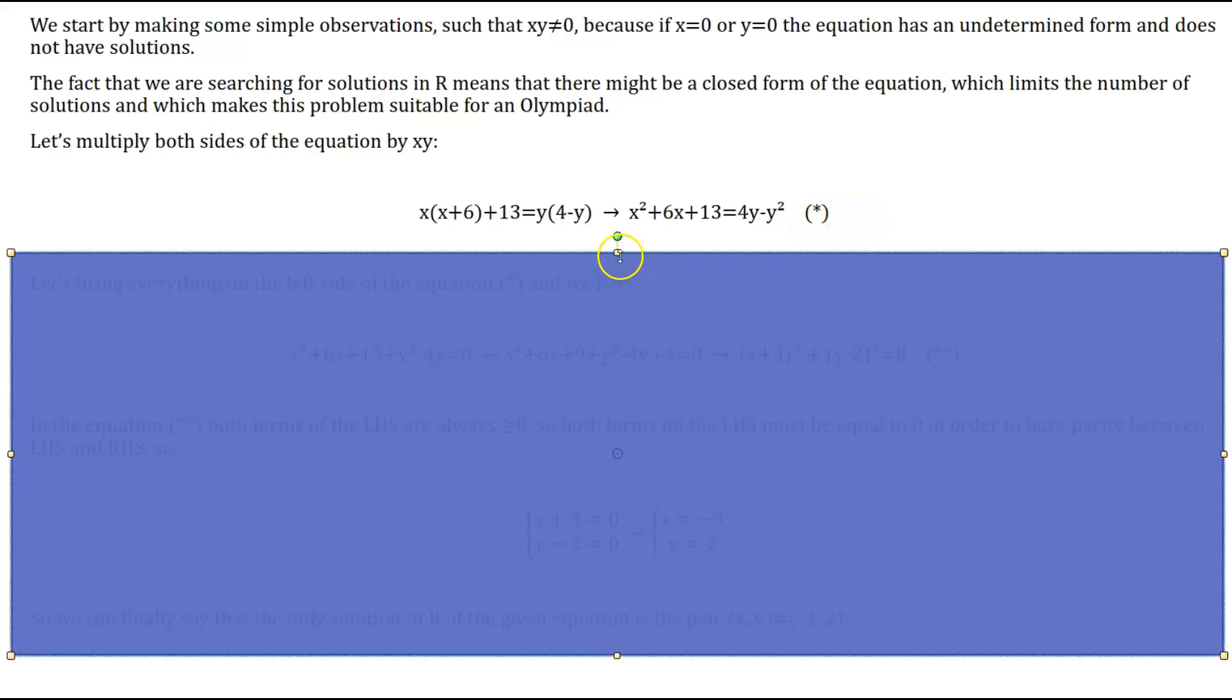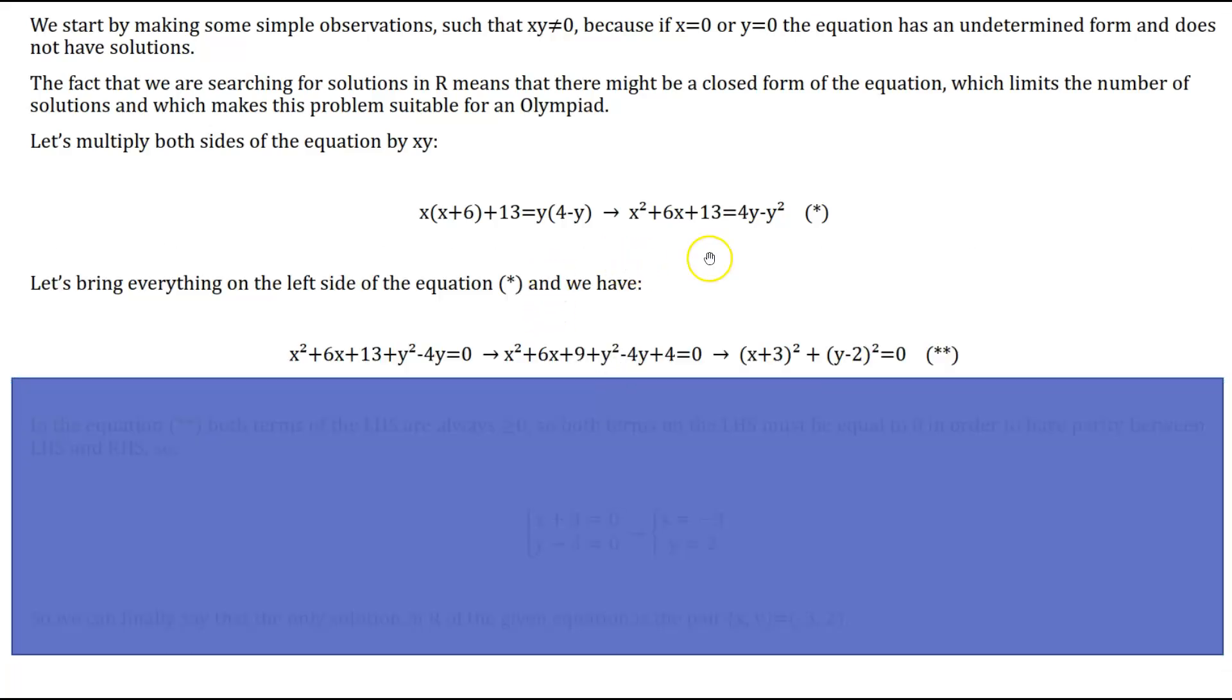We'll bring everything on the left side of equation one and we have x² + 6x + 13 + y² - 4y = 0. We now try a well-known technique called completing the square.